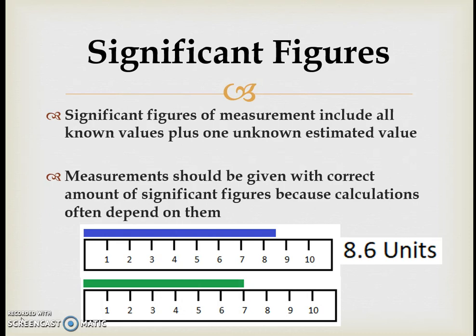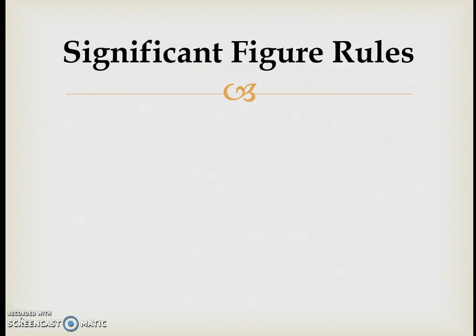For something more exact — like a green line — to let the person reading the number know just how exact your measurement was, you report out to the tenths place. If it lands exactly on the seven, you report 7.0, indicating your instrument measured to the ones place and you estimated out to the tenths place, rather than just writing 7, which implies it was estimated between a six and an eight.